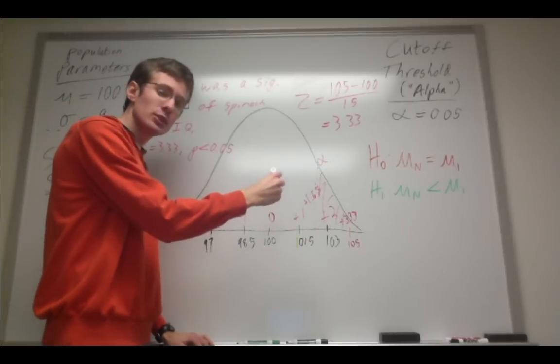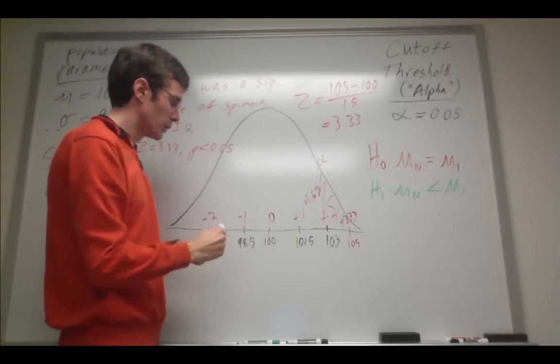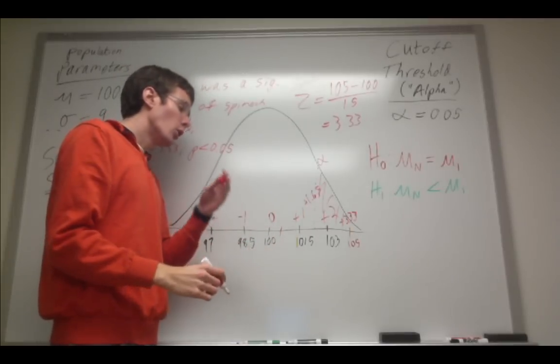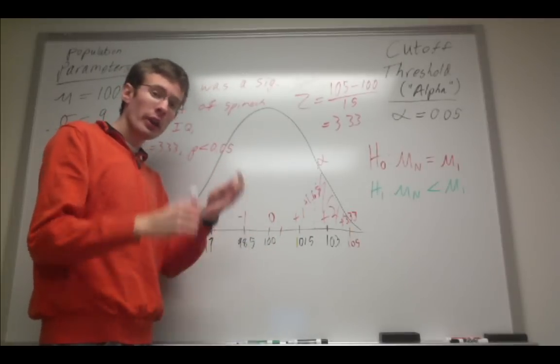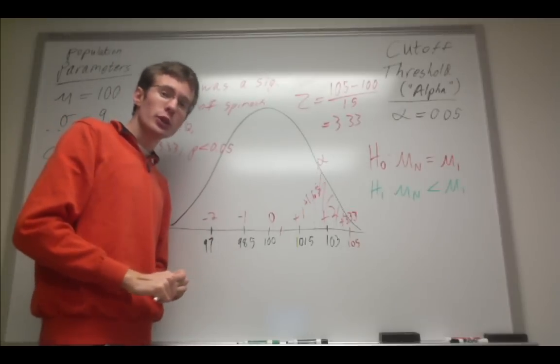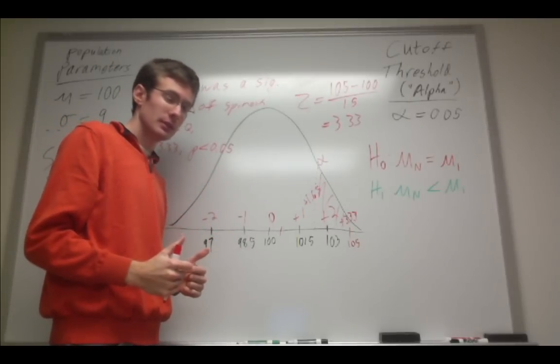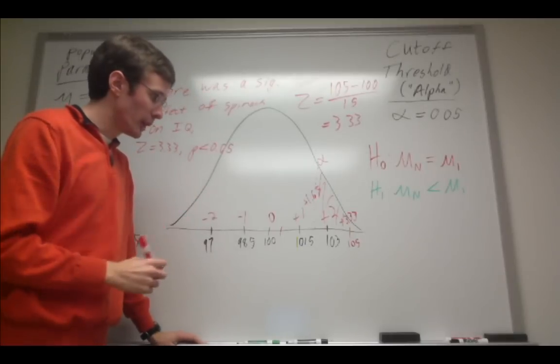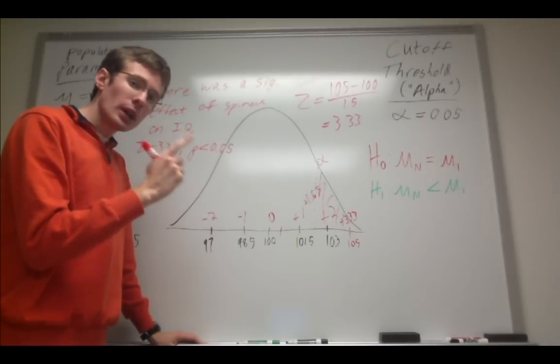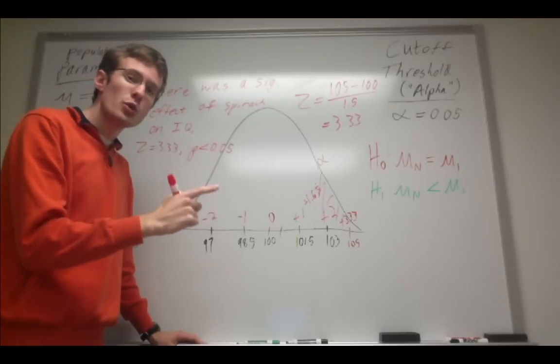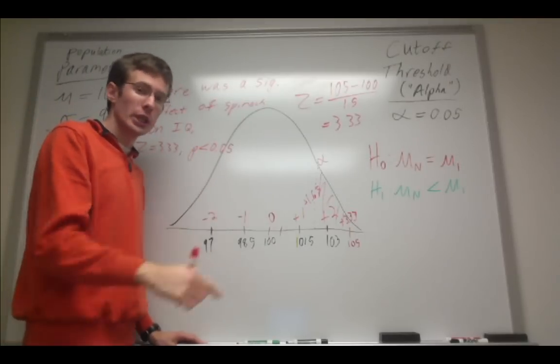Likewise, if we had not rejected the null, let's say we found a z-score around here and we had not rejected the null, we could make a type 2 error in which case we would fail to reject the null but there actually is a significant difference. So let's think about it like this. You can only commit type 1 errors when you've rejected the null. You can only commit type 2 errors when you have failed to reject the null.